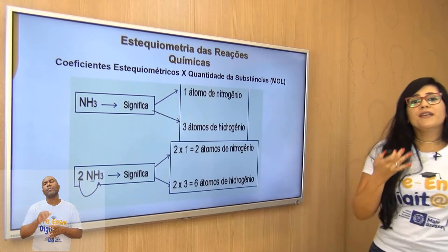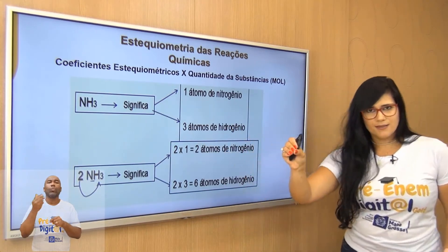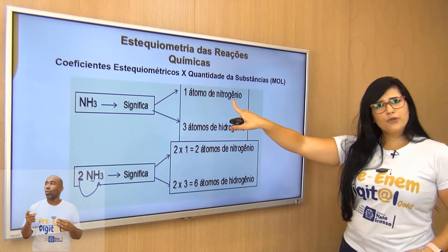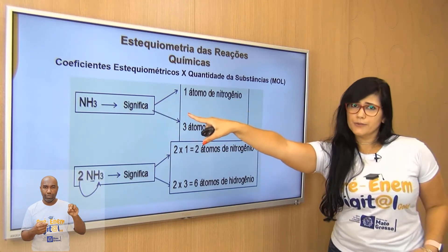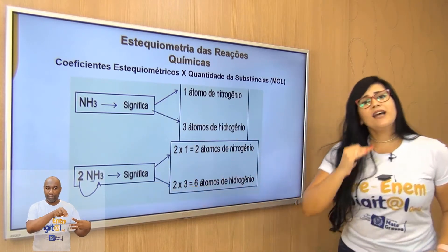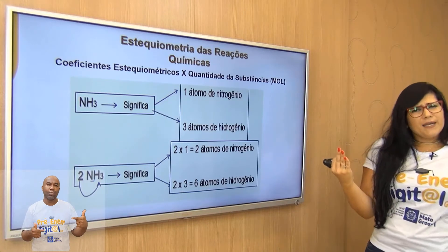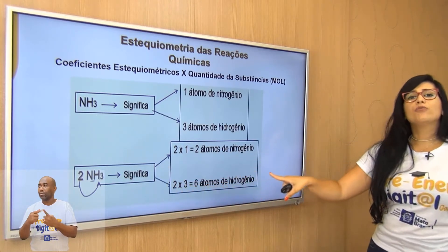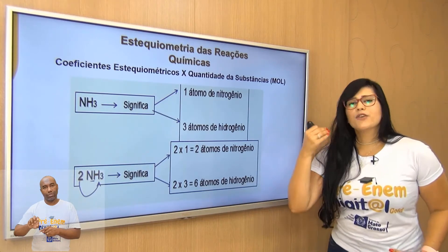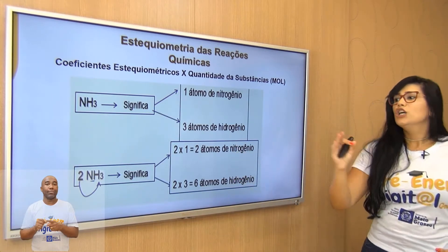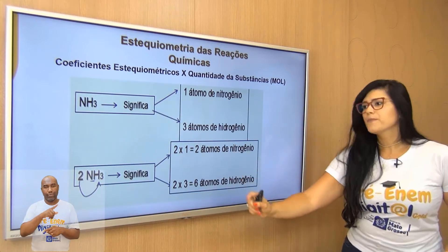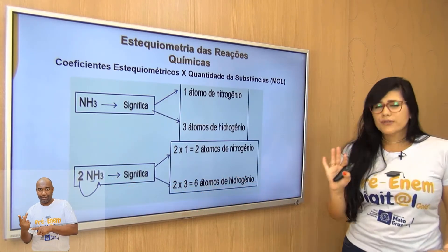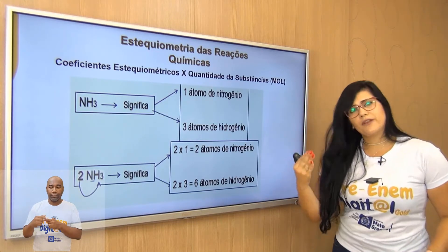O que significa colocar um número na frente da substância? Aqui tenho NH₃ sem coeficiente: 1 nitrogênio e 3 hidrogênios. Se eu colocar o coeficiente 2 na frente do NH₃, multiplico por 2: passo a ter 2 átomos de nitrogênio e 2 × 3 = 6 átomos de hidrogênio. O coeficiente estequiométrico multiplica todos os elementos que formam a substância.